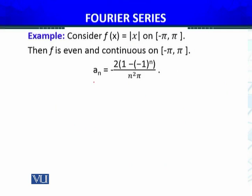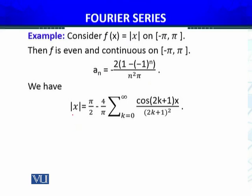After evaluating the integrals, the result is: |x| = π/2 − (4/π) · Σ [cos((2k+1)x) / (2k+1)²], summing k from 0 to infinity. The a₀ value gives π (as a₀/2 in the Fourier series), and the remaining terms involve cos. Now, if n is even, the expression yields 1 − 1 = 0, so aₙ = 0 if n is even.